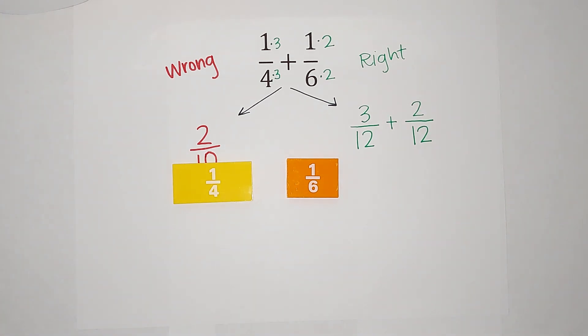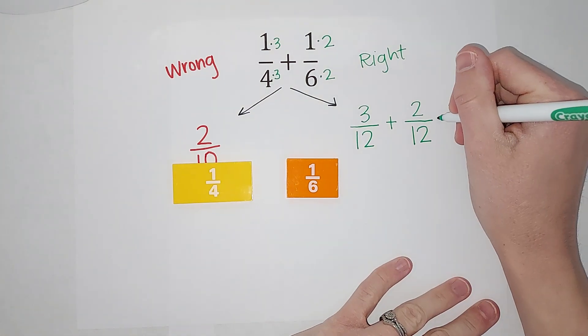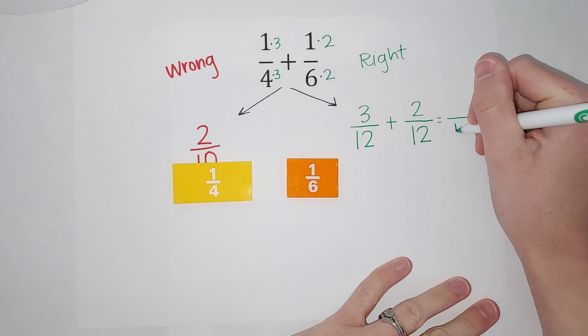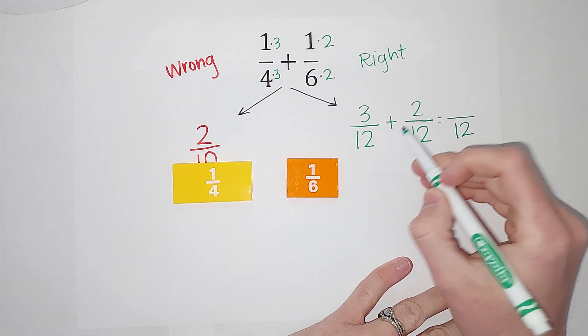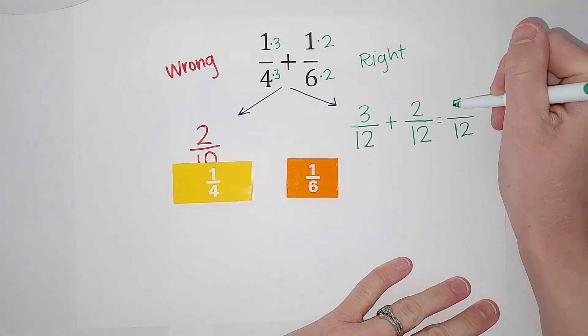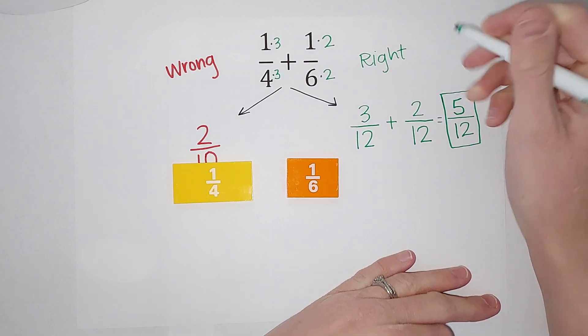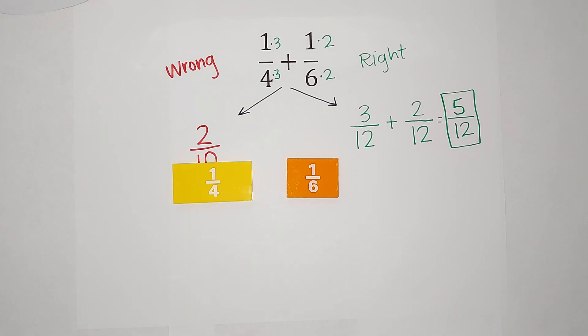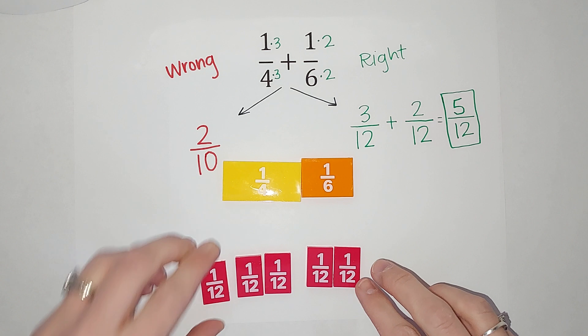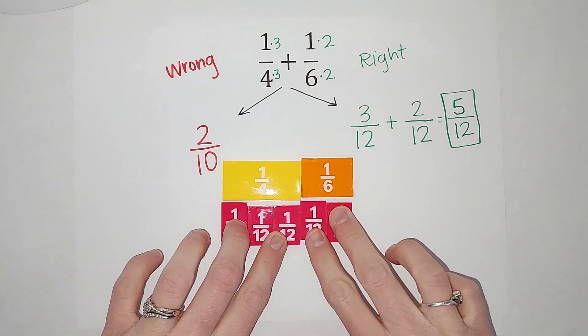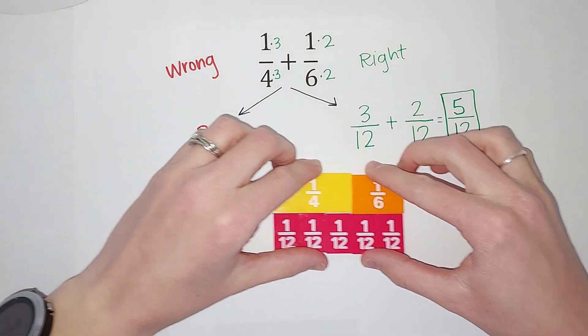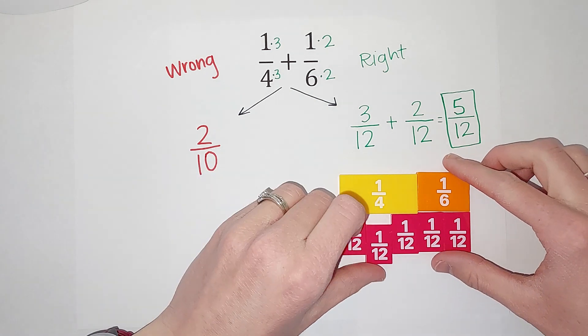So now when I add these, the denominator stays the same, right? It's still 12. So my denominator stays 12. And then I add the numerator. So three plus two gives me five. So I believe that is my answer. Let's go ahead and check. 1/4 plus 1/6. Here come my cute little twelfths. 5/12. And look at how beautifully that lines up.